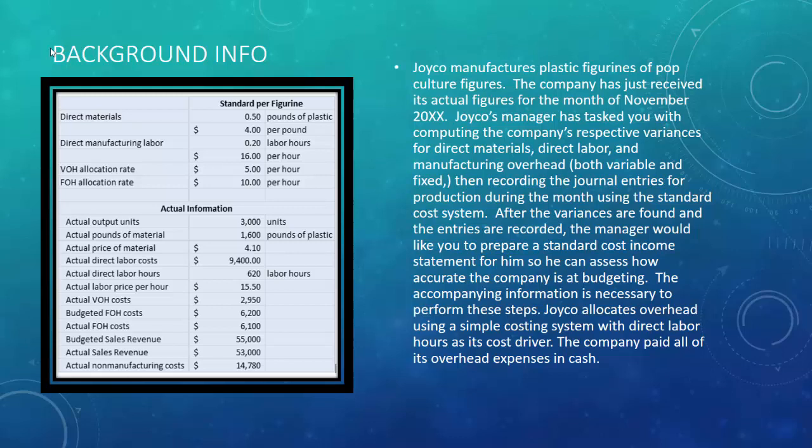The actual information: they made 3,000 figurines and used 1,600 pounds of plastic. The actual price of material was $4.10 per pound. Actual direct labor costs were $9,400 for 620 labor hours, so the actual labor price per hour is $15.50. Actual variable overhead costs were $2,950. Budgeted fixed overhead was $6,200 but they actually spent $6,100. Budgeted sales revenue was $55,000 but actual was $53,000. Actual non-manufacturing costs were $14,780.